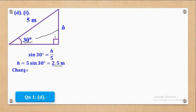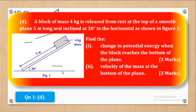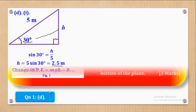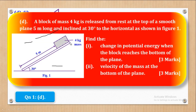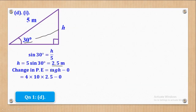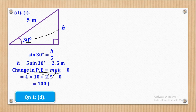Now that we have the height, we can find the change in potential energy. The bottom of the plane is the reference point, so the final potential energy is zero. Change in PE = mgh − 0 = 4 × 10 × 2.5 = 100 J. The unit must be stated — capital J for joules.